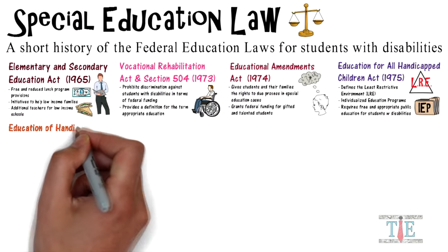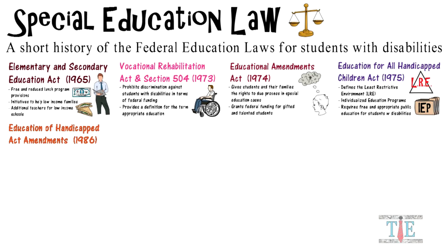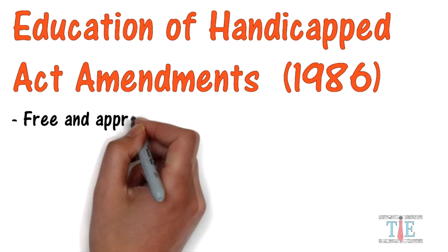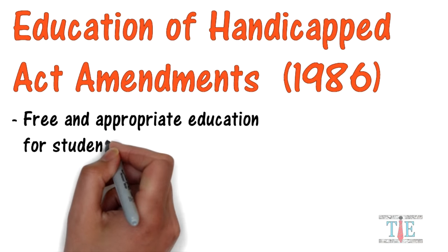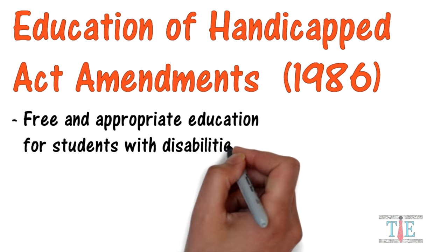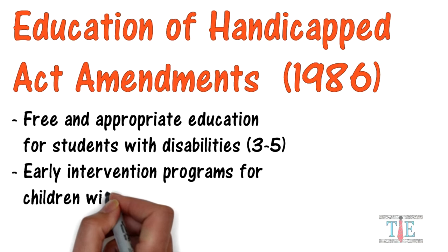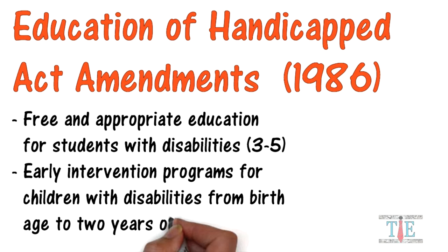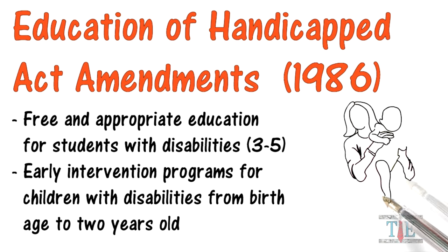Next, the Education of Handicapped Acts Amendment of 1986. The most important success here is that free and appropriate education was extended to children from ages 3 to 5, whereas before it began at age 5. Also, early intervention programs were established for children with disabilities from birth to 2 years old. This law created the Handicapped Infants and Toddlers Program, specifically aimed at children with developmental delays and other disabilities.